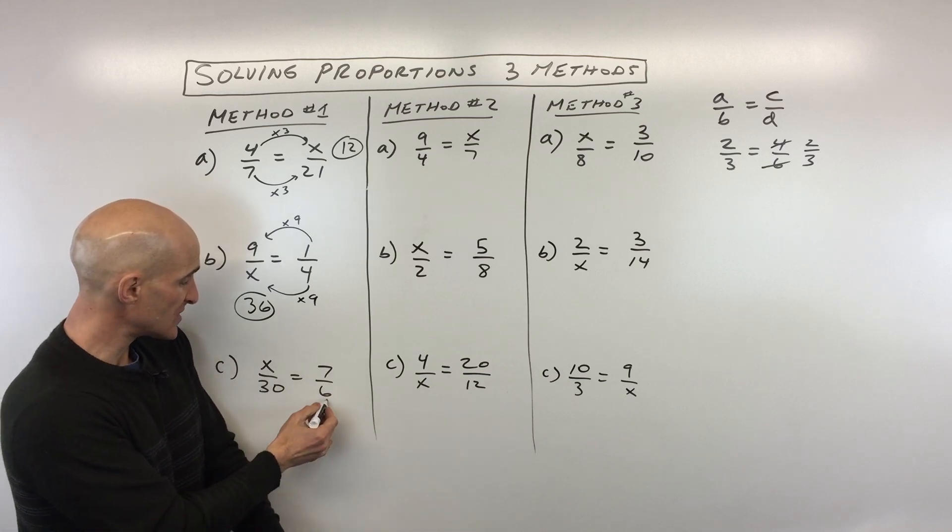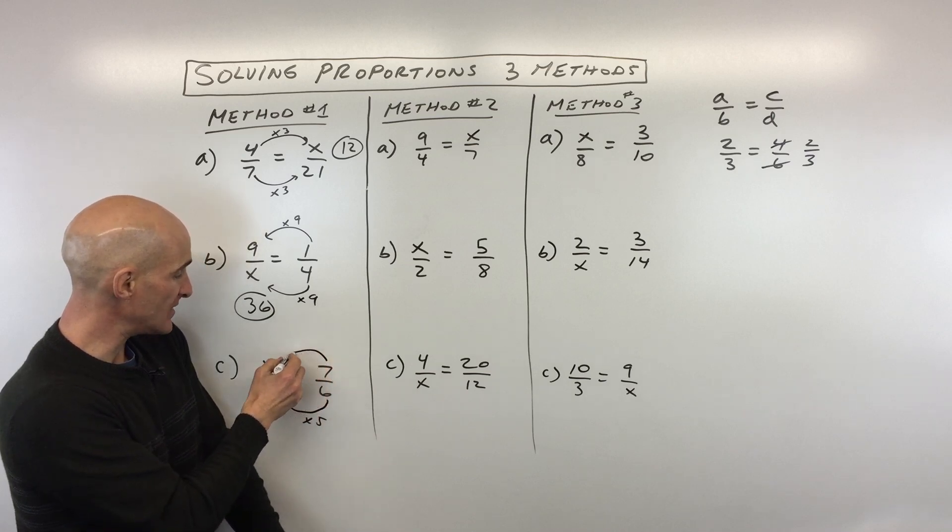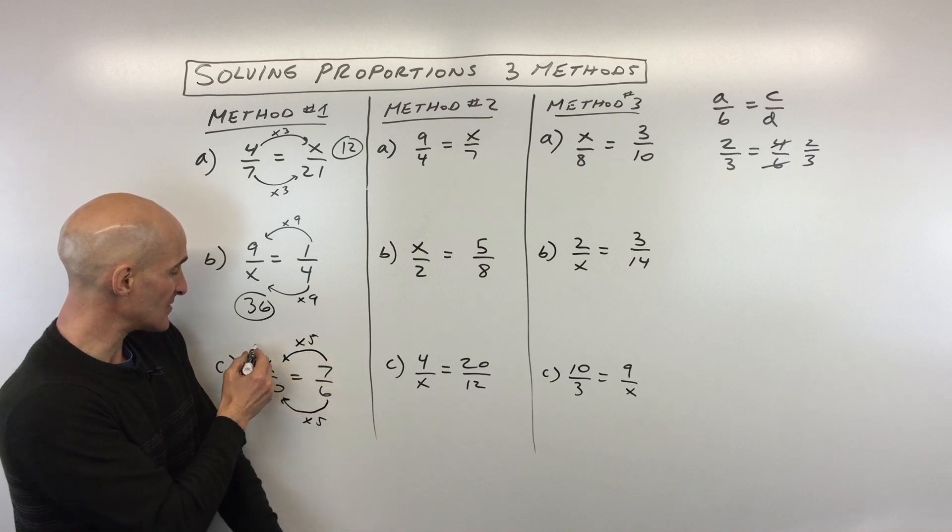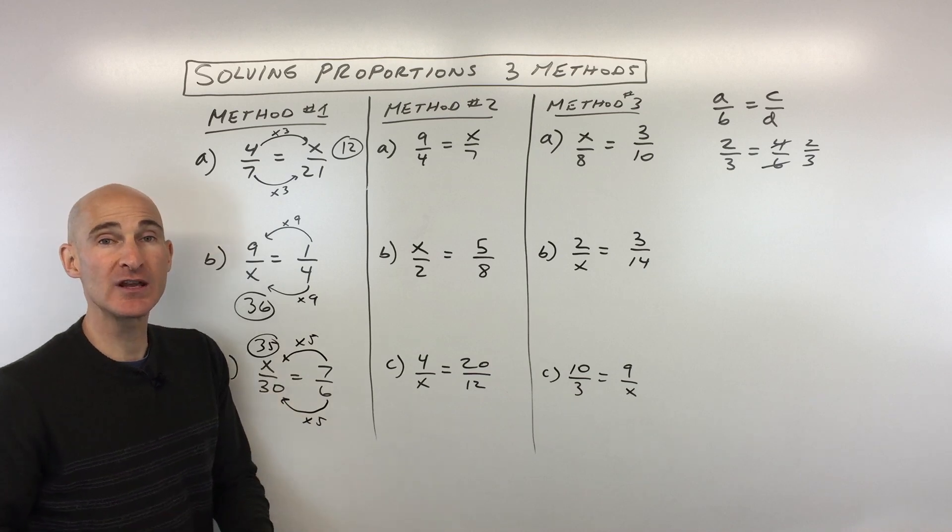Okay, so here what we're going to do is we're going to say, well, I know 6 times 5 is 30. If I multiply the denominator by 5, I have to multiply the numerator by 5. So you can see 7 times 5 gives us 35. And again, if you reduce 35 over 30, it's going to be equivalent to 7/6.